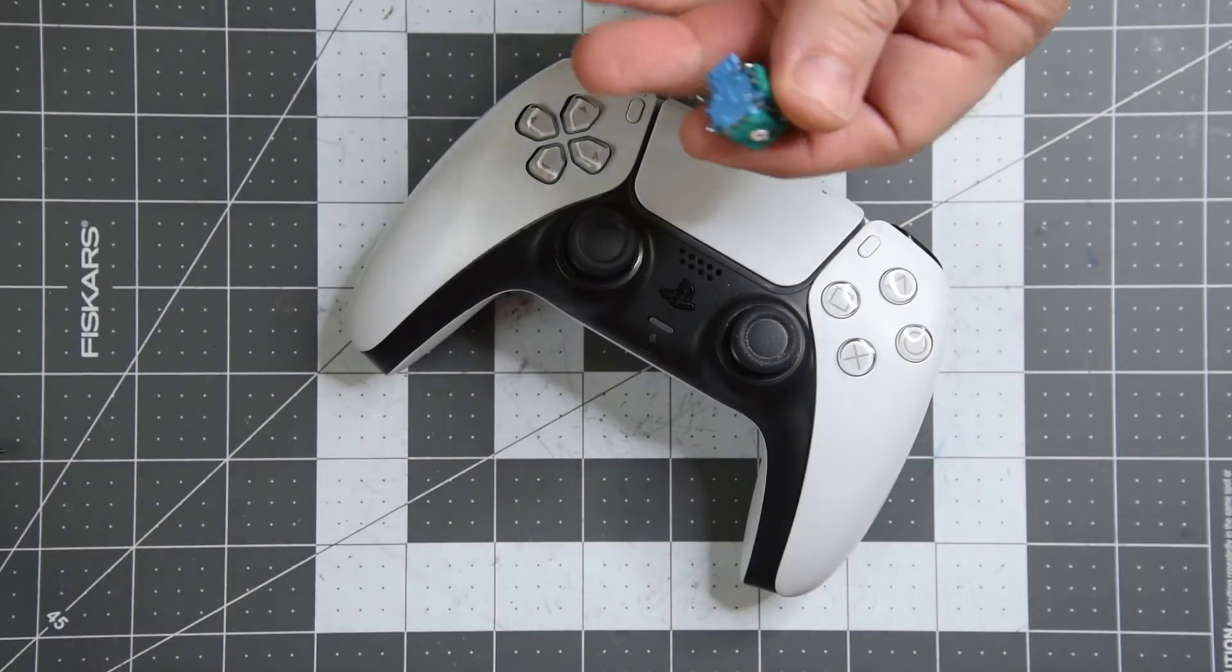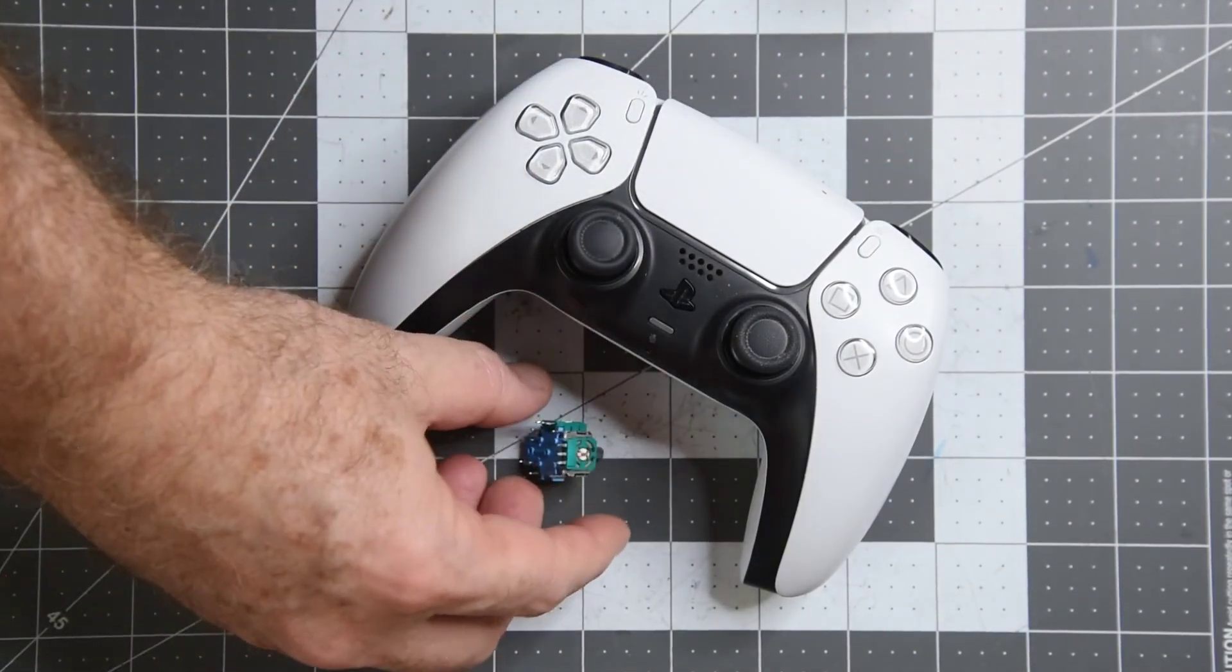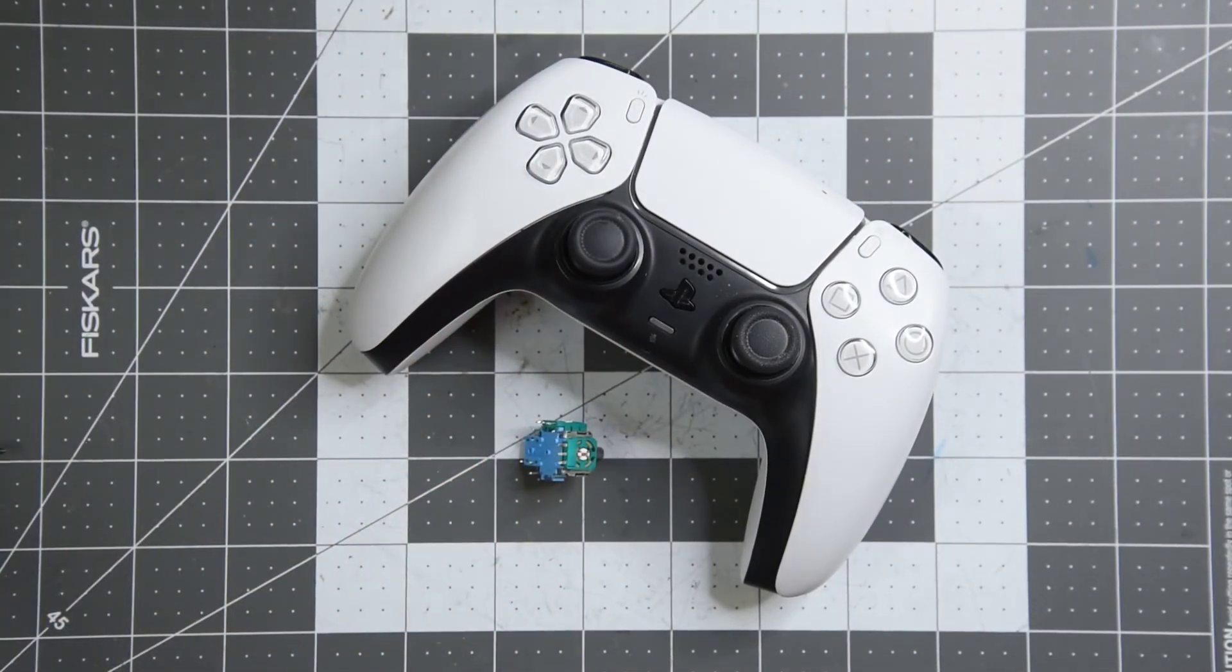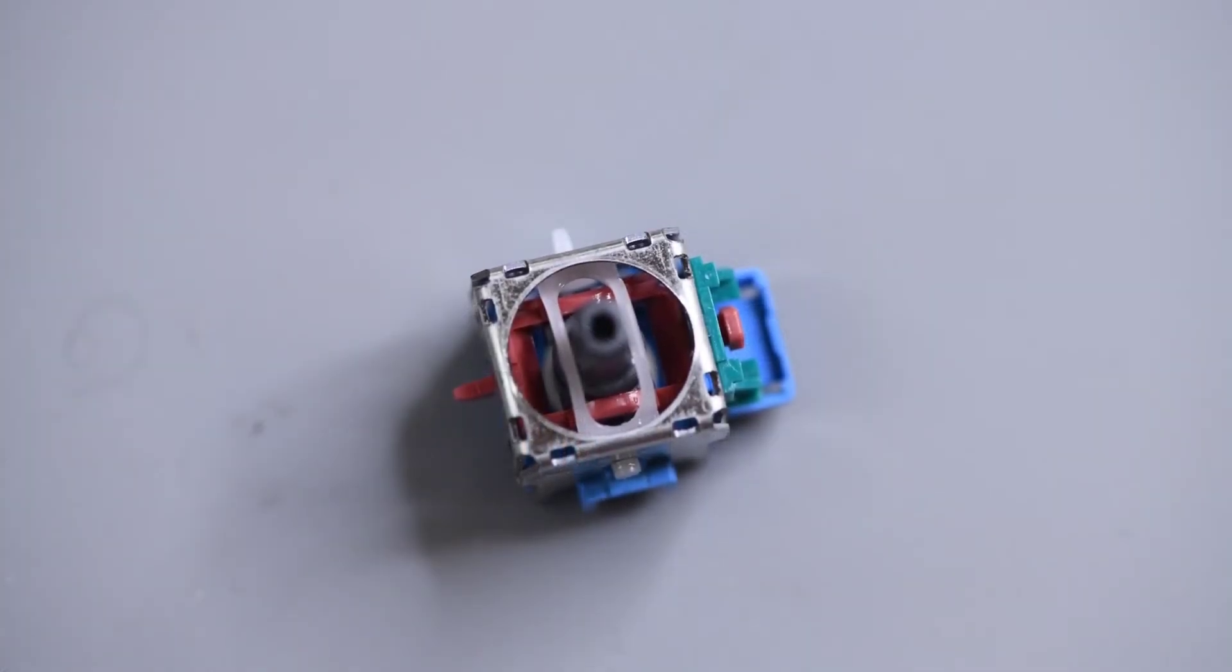If you have a DualSense controller and the analog sticks click almost certainly there are Alps joysticks in it. If anyone has an older Alps joystick say 4 or 5 years or older would be great if you would check them and see if they click and give us a comment on what you find.